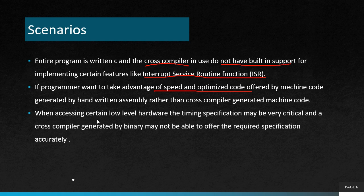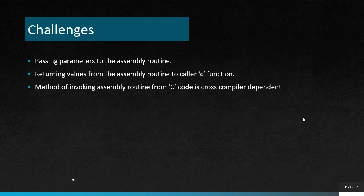Another scenario is when accessing certain low level hardware, the timing specification is very crucial. In that case, it's better to use assembly language than high level language. In doing this, there are some challenges, which are similar to using a function: we pass parameters, the function does its purpose, and it returns a value. The challenges are we have to pass the parameters and we have to pass the return value to the calling method, and we also have to invoke the function. It is a little more complicated as we are passing the function from a high level language to an assembly routine.